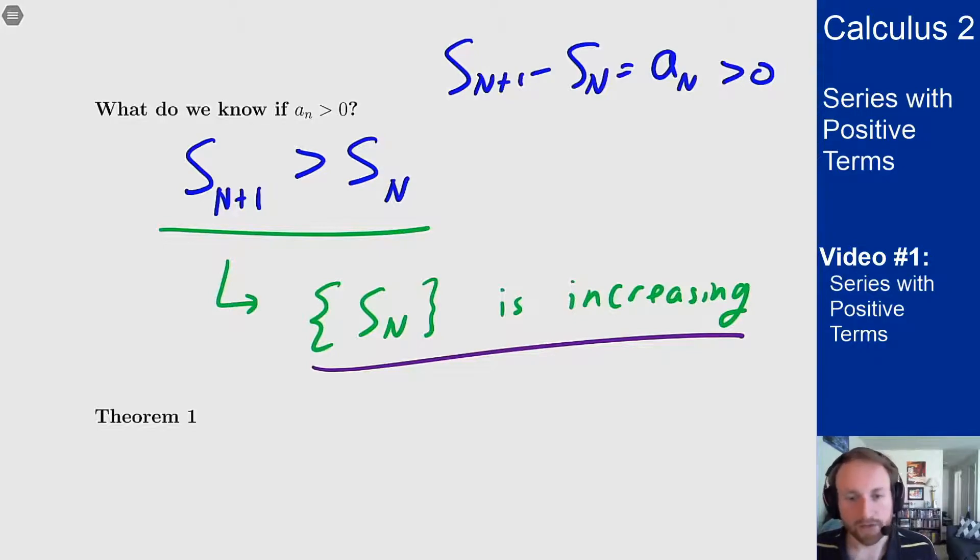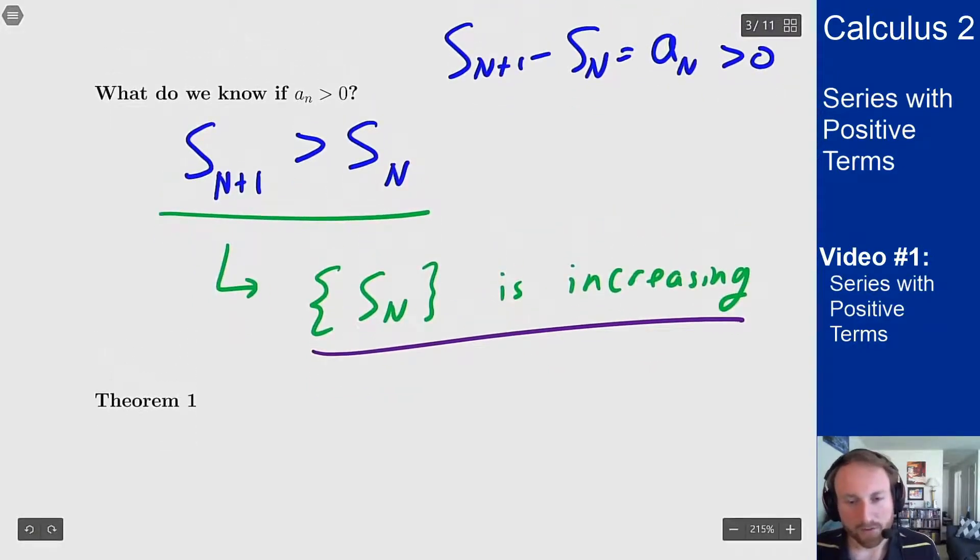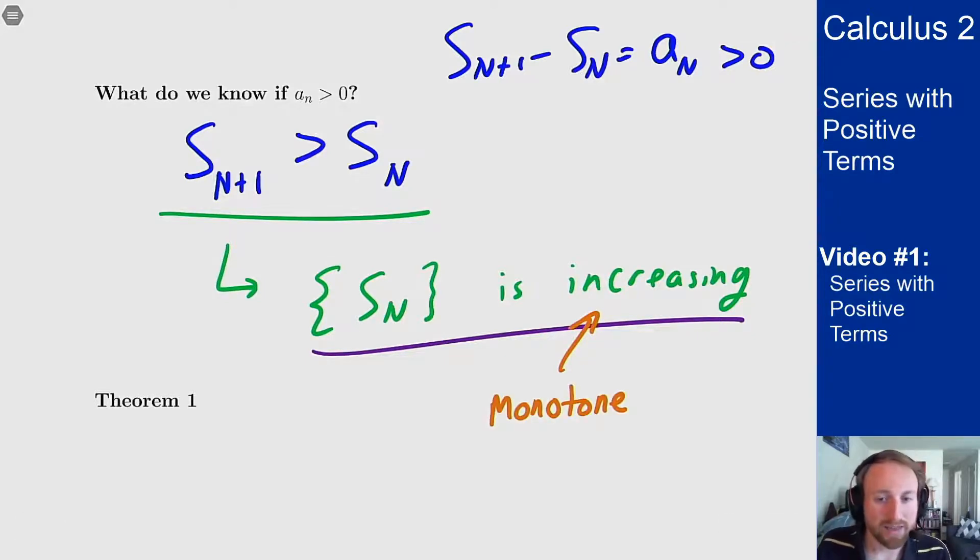This is one of our theorems of sequences. The theorem we had before said that any bounded monotone sequence converges. Well this tells me that the sequence of partial sums is monotone. That means if I can show it's bounded, I then get convergence.